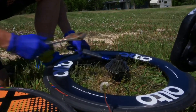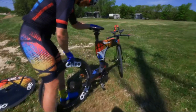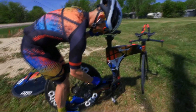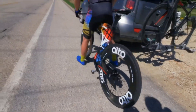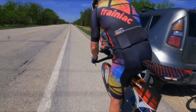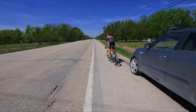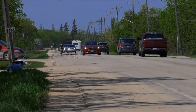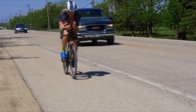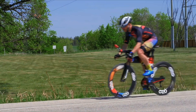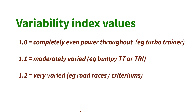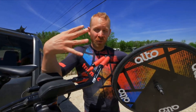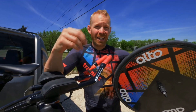What does the number mean? A Variability Index of 1.0 means power is completely even throughout — you don't see that very often in normal riding; you'd basically have to be on a turbo trainer with the difficulty turned down to zero. The more bumpy or hilly the course, the higher the VI goes — maybe 1.1 or even 1.2 in a really crazy race like a criterium where your effort is very uneven.